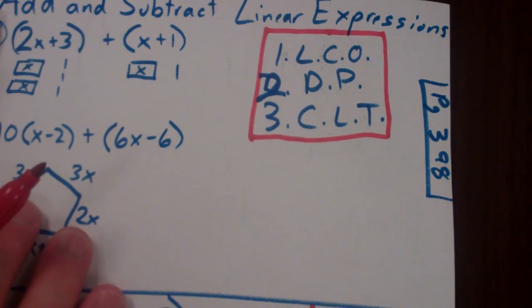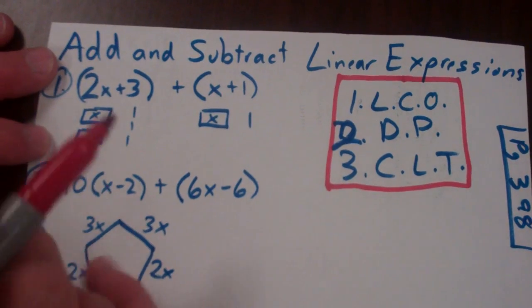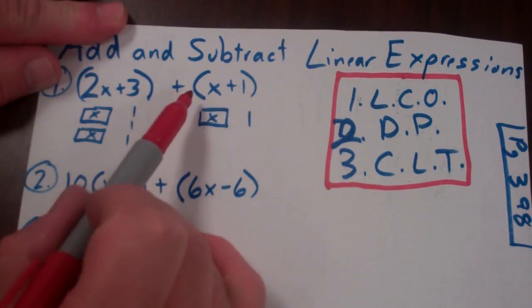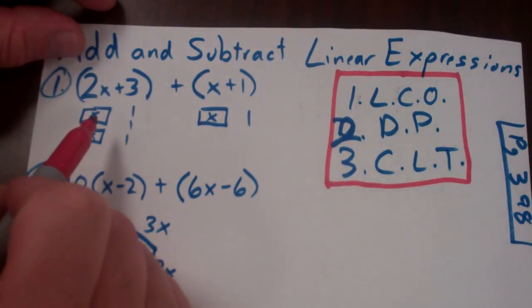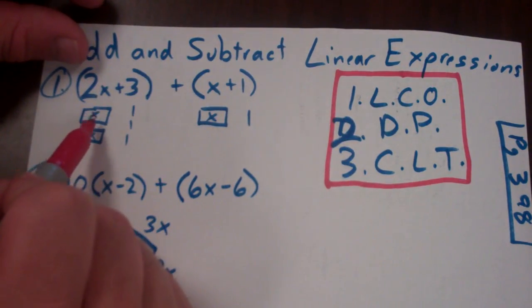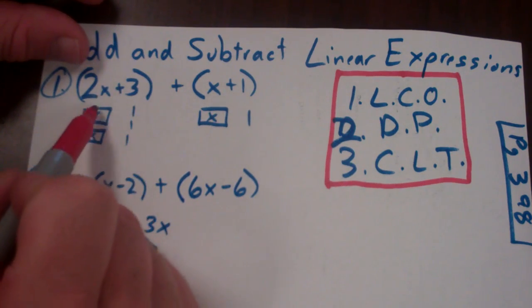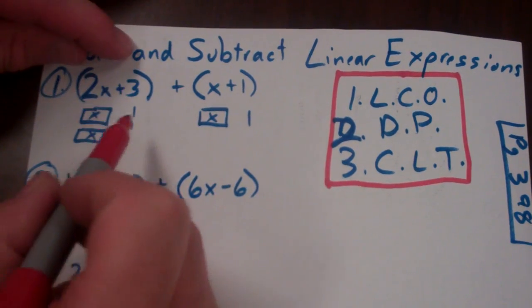Alright, so let's take a look at this. This is guided practice off page 398, by the way. Number one says quantity 2x plus 3 plus the quantity x plus 1. And one way to do this is to draw out a model. So I drew an x because I don't really know what they are.